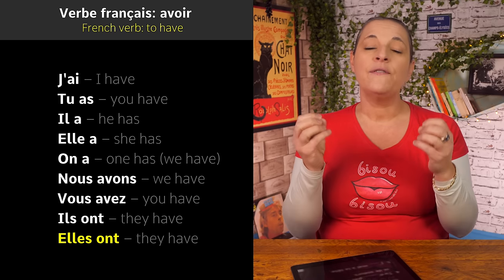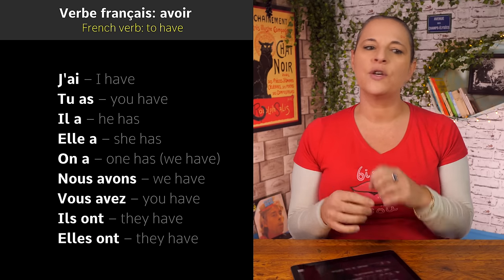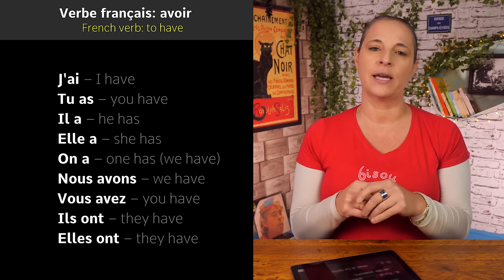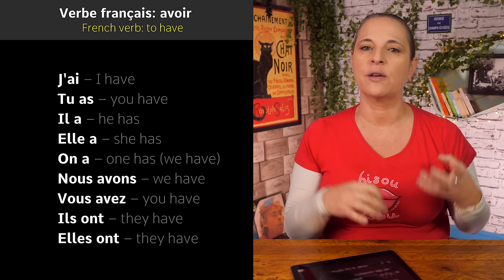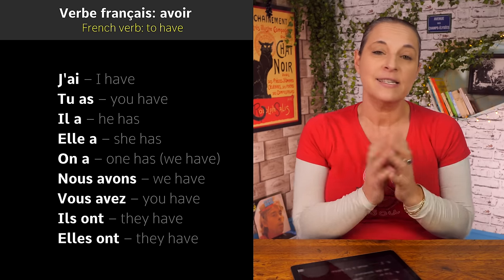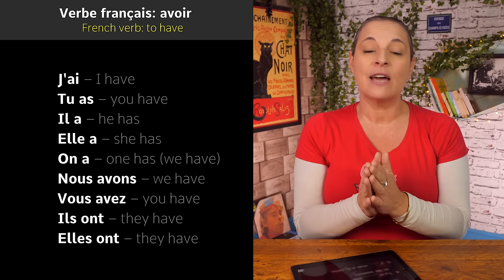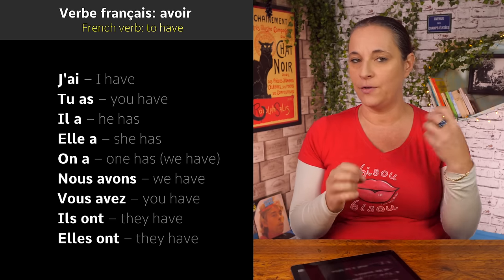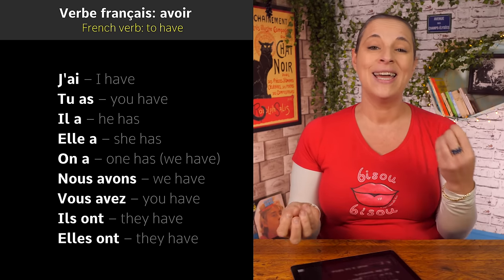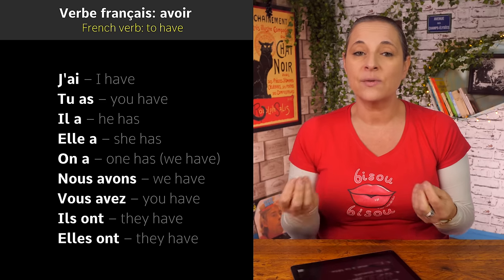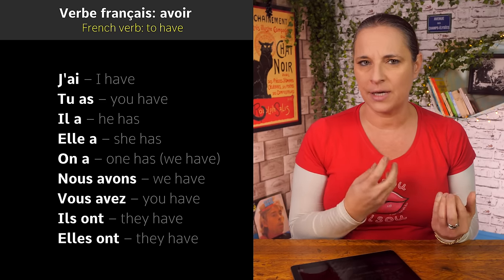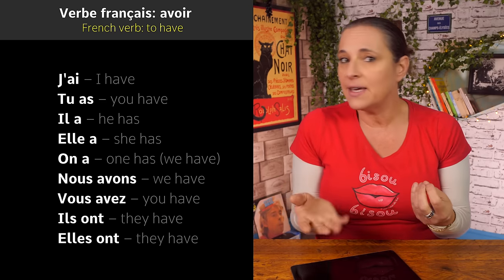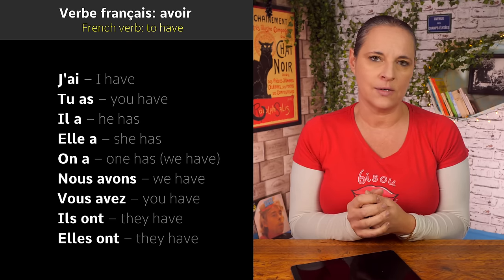If you do not know why we have two ways of saying 'you', two ways of saying 'we', two ways of saying 'them', please refer back to my subject pronoun video. Now, remember that we have to do the liaison between the subject pronoun and the verb. Ils ont sounds like that because 'ils' ends with an S and 'ont' begins with a vowel. Vous avez — same here. Nous avons — and so on.